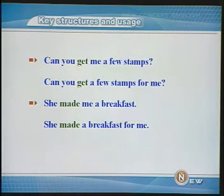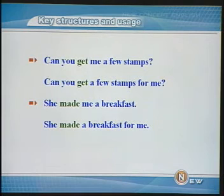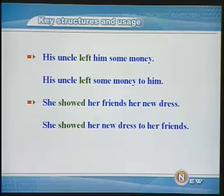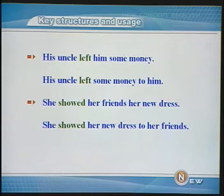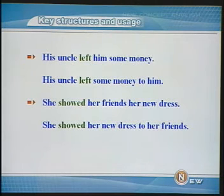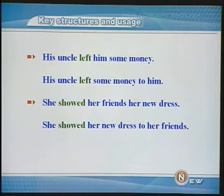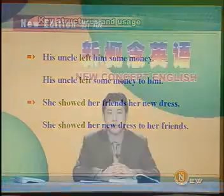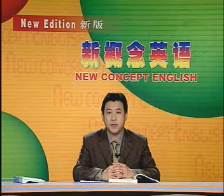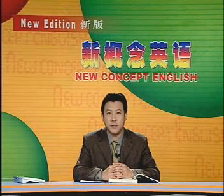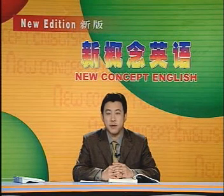She made me a breakfast. 她给我做了一份早餐。也可以说: She made a breakfast for me. His uncle left him some money — 他的叔叔给他留了一些钱。也可以说: His uncle left some money to him. She showed her friends her new dress — 她给她的朋友看了看她新买的衣服。这句话也可以说: She showed her new dress to her friends. 刚才我给大家介绍了英语中能够带双宾语的最常用的几个动词。请大家留意,一般来讲动词跟双宾语的结构在口语中用的比较多,因为它比较简洁。